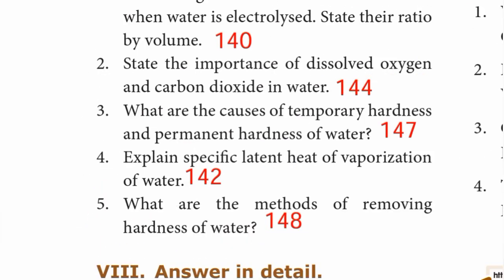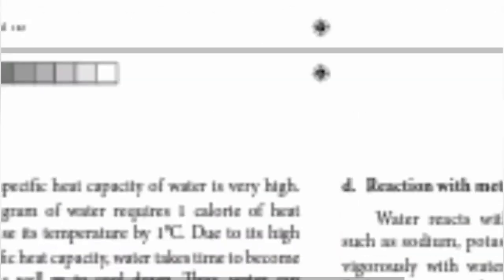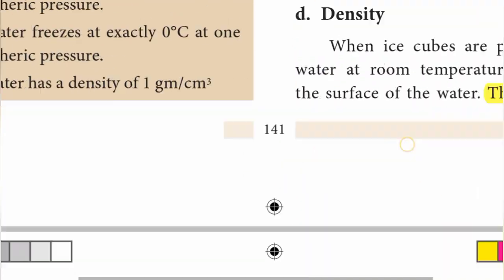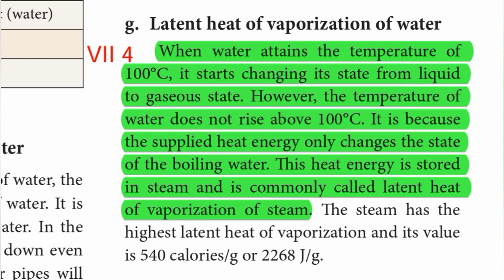Question number 4: Explain the specific latent heat of vaporization of water. Page number 142. When water attains the temperature of 100°C it starts changing its state from liquid to gaseous state. However, the temperature of water does not rise above 100°C because the supplied heat energy only changes the state of the boiling water. This heat energy is stored in steam and is commonly called latent heat of vaporization of steam.